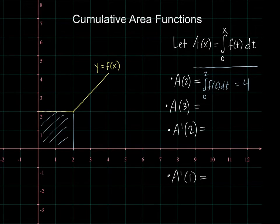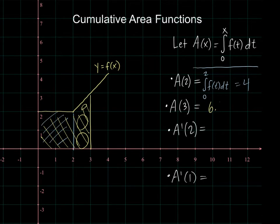A of two is not the height of a function that I'm looking at. A of two is the area accumulated between zero and two. A of three is the area accumulated from zero to three. So that's going to be all of this area. So I already had four. Now I've got another box five, six and a half, 6.5.